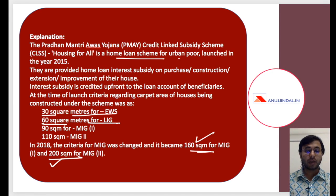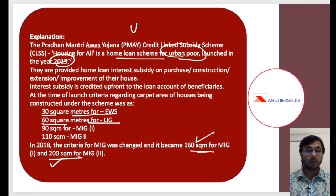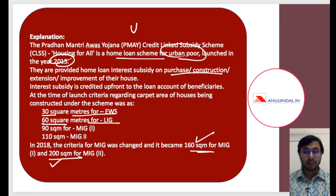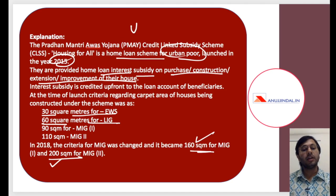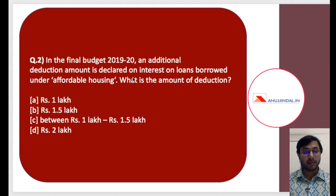PMAY is a home loan scheme for urban poor — Pradhan Mantri Awas Yojana Urban — as well as for rural poor. It was launched in the year 2015. Beneficiaries are provided home loan interest subsidy on purchase, construction, extension, or improvement of their house. So whether you already have a house, want to purchase one, or have purchased a plot of land and want to construct, you are provided home loan interest subsidy. That is the primary purpose of PMAY.